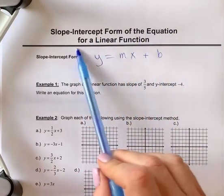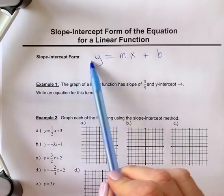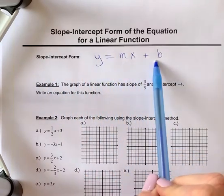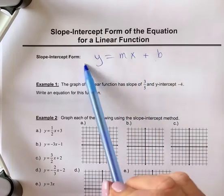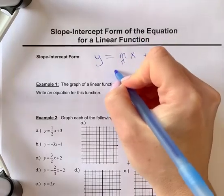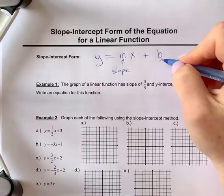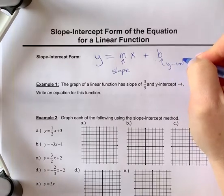Slope-intercept form of the equation for a linear function. We're going to look at what's called slope-intercept form of this equation. Here's how we would write slope-intercept form. This is a linear equation. We use the variable m to represent slope and the variable b to represent y-intercept.